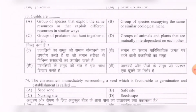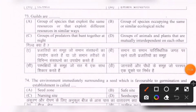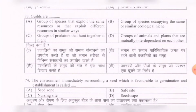Next question: Guilds are — options are: group of species that exploit the same resources or that exploit different resources in similar ways; group of species occupying the same or similar ecological niche; groups of predators that hunt together at night; groups of animals and plants that are mutually interdependent. The correct option is the first one — groups of species that exploit the same resources or exploit different resources in similar ways.